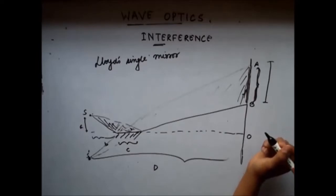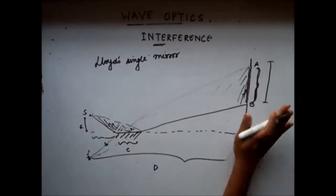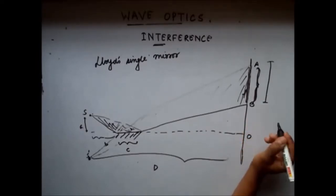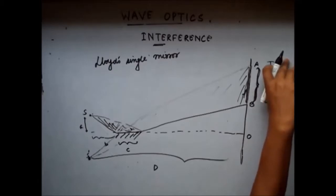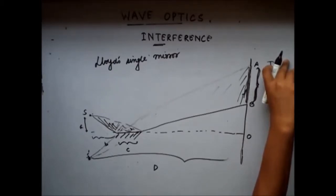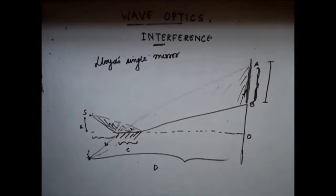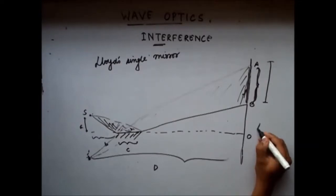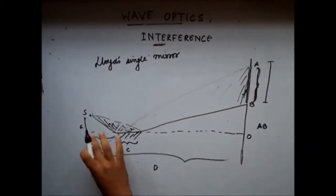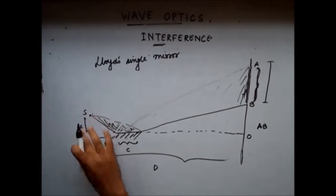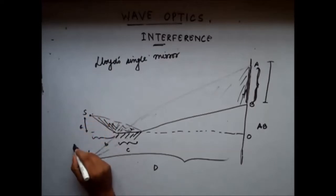My question is: in this setup, what is the total width of the region where I get the interference pattern? What is AB? What is the distance between the two sources? And what is D?